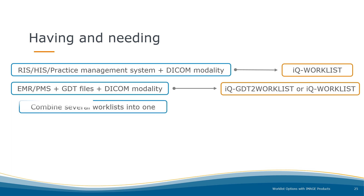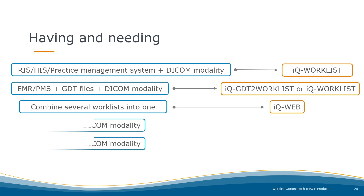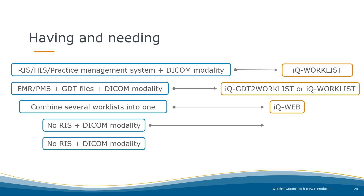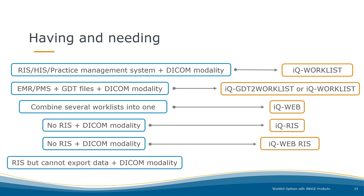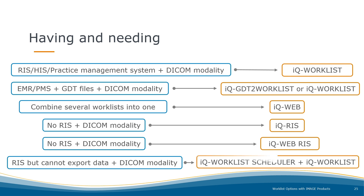Option 4: you are looking for a customizable RIS and already have some modalities — you have two options: our thin client solution IQ-RIS or our zero-footprint client IQ-Web-RIS. Option 5: your RIS can export data and trigger a worklist order, but you still want to work with a separate worklist — then IQ Worklist Scheduler is your solution of choice, and IQ Worklist is also needed to transfer the worklist to the device.